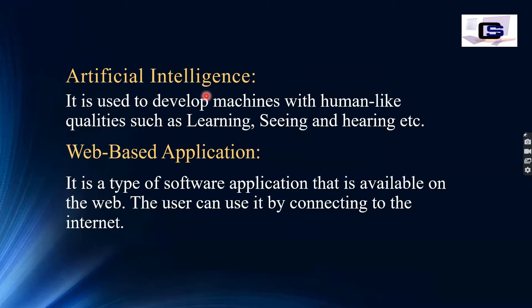First of all, we will see artificial intelligence. It is used to develop machines with human-like qualities, such as learning, reasoning, and hearing. For example, you can go to a restaurant where robots serve you with food. Basically, artificial intelligence involves making machines that perform human-like work. We have made machines with human-like qualities — they can learn and work.